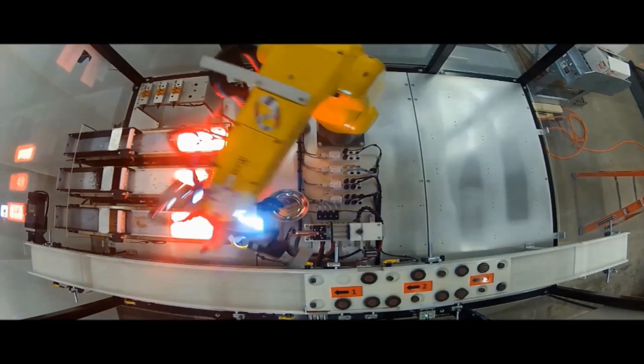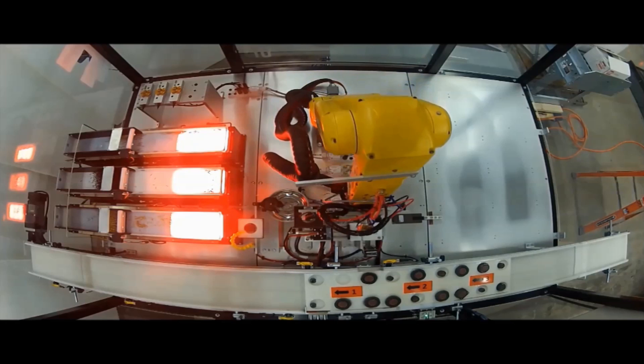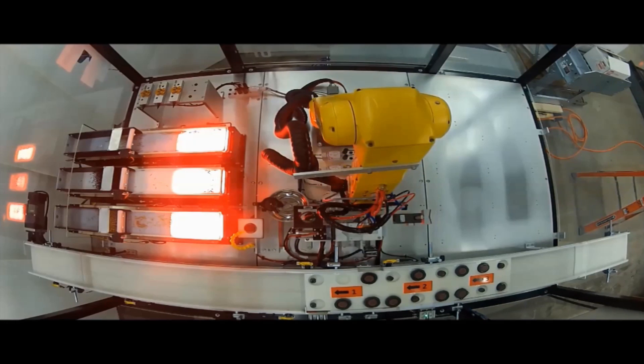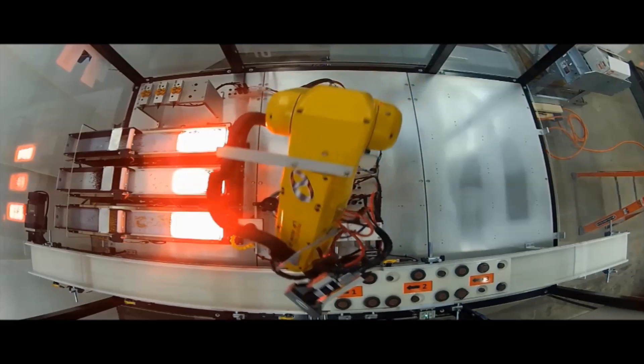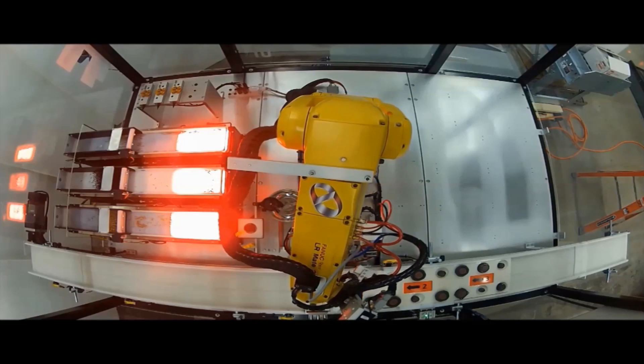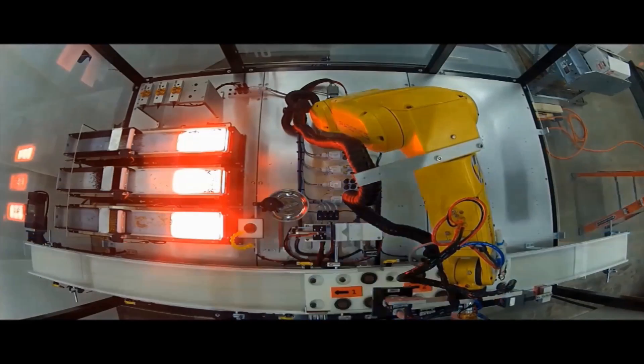The FANUC LR-Mate 200ID 7L robot is picking contacts and seal plugs from any of three backlit shaker table feeders that shake and spread the parts enough to allow the robot vision system to see isolated parts.